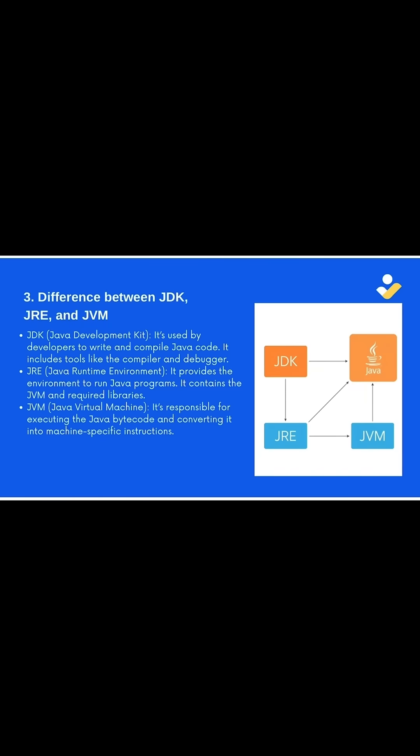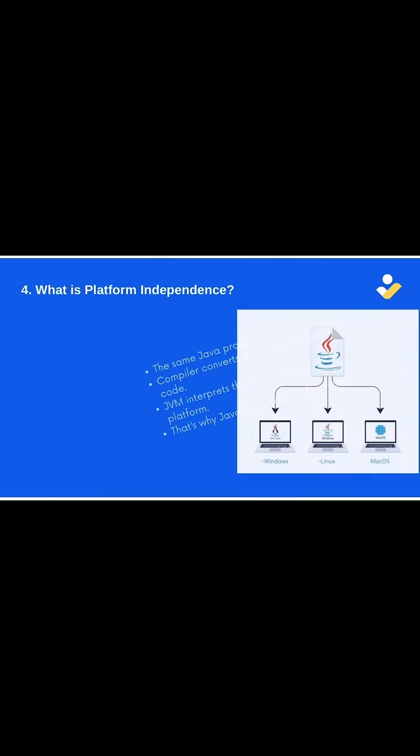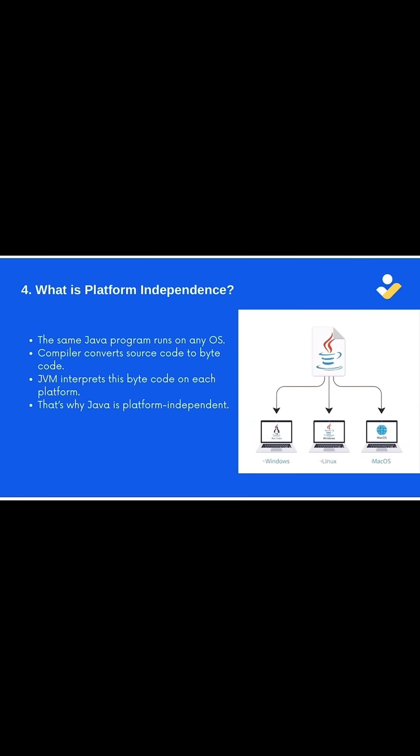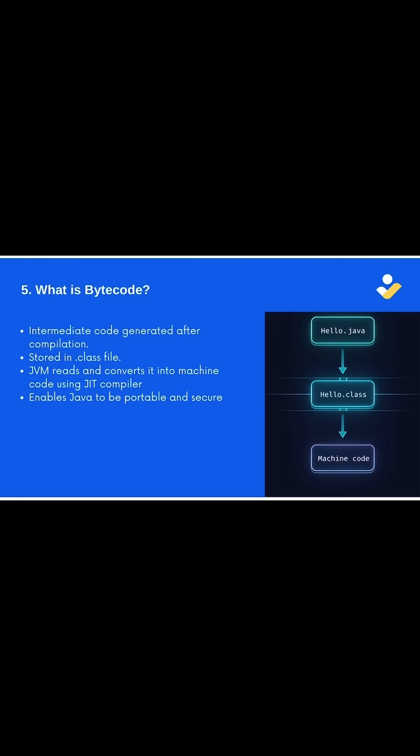Question 4: what is platform independence in Java? Platform independence means that the same Java program can run on any operating system without making any changes to the code. When you compile Java code, it produces bytecode, which is platform neutral. This bytecode is then executed by the JVM, and since the JVM exists for all operating systems, the program can run anywhere. That's why Java is called a platform-independent language.